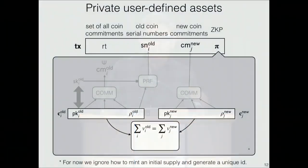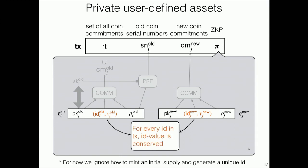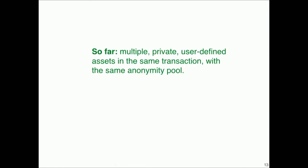Our first step is to generalize what the coin stores — not only the value, but also an asset identifier. Inside the zero-knowledge proof, we guarantee not just that for a single asset the value is conserved, but that for every asset participating in the transaction, the value is conserved for that asset. This gives us multiple private user-defined assets sharing the same anonymity pool, where assets can even participate in the same transaction.